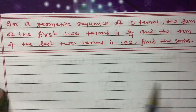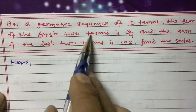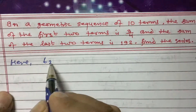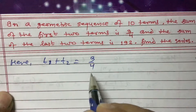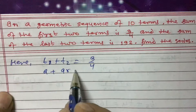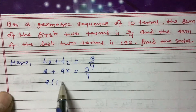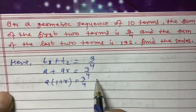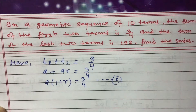The sum of the first two terms means t1 plus t2 equals 3/4. Here t1 is a and t2 is ar, so a plus ar equals 3/4. Taking a common, we get a(1 + r) = 3/4. This is Equation 1.